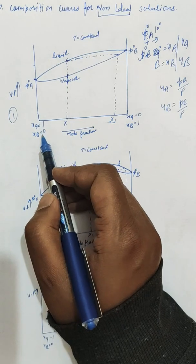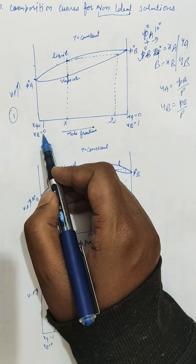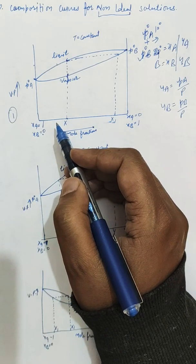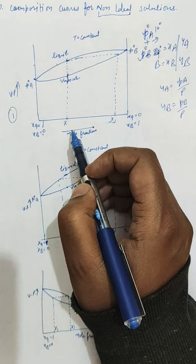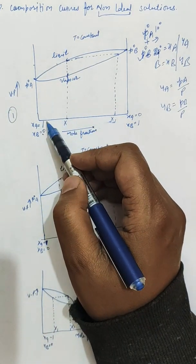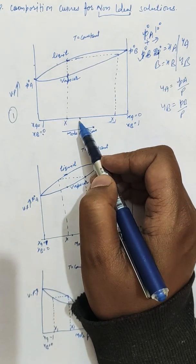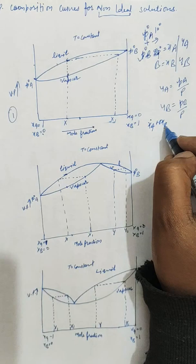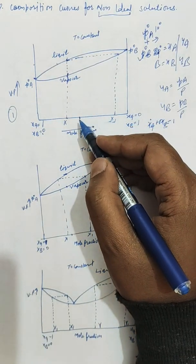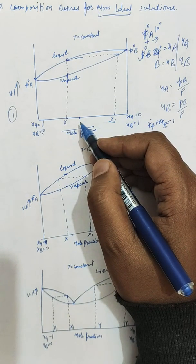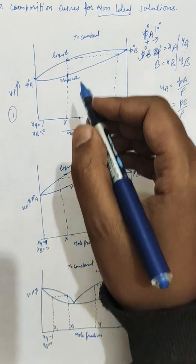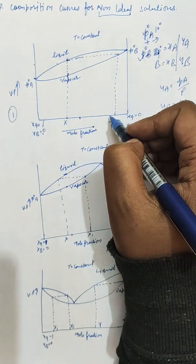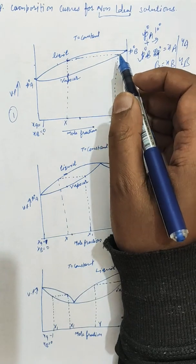The composition varies from x_A = 1, x_B = 0 on one side to x_A = 0, x_B = 1 on the other. At the midpoint, x_A = 0.5 and x_B = 0.5, since the sum of mole fractions is always equal to 1. As a result, there is no maxima or minima in this Type 1 curve.